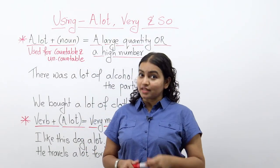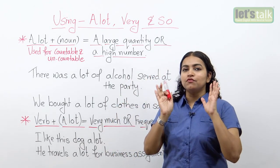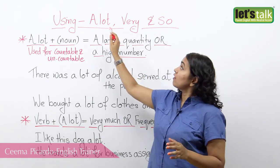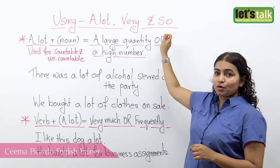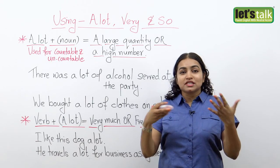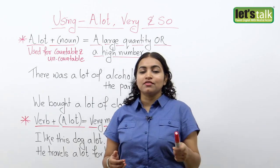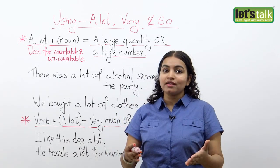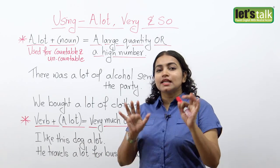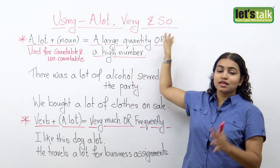Hi, this is Seema, and today I'm going to bring you a new lesson on the usage of some very common words. What are they? They are 'a lot,' 'very,' and 'so.' Now all these words kind of seem the same when it comes to using them in a sentence, but actually there is a difference in the way you use them, so you can't use them interchangeably. Let's have a look at how and when you might need to use either of these words in a sentence.